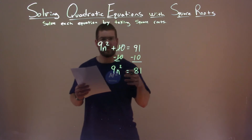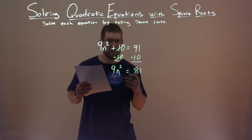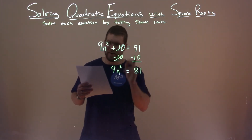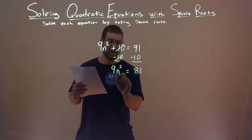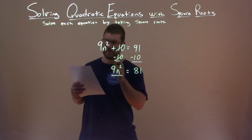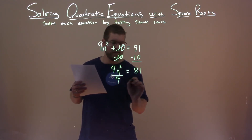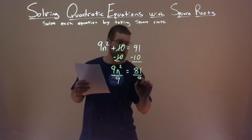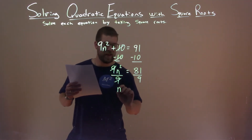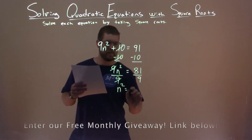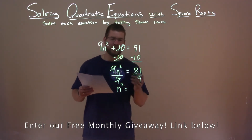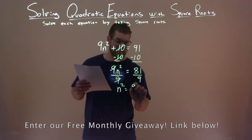Alright, n is being multiplied — getting mixed up here. We divide both sides by 9. The 9s cancel leaving us with n squared by itself and 81 divided by 9 is 9.